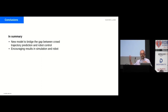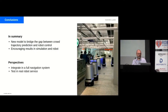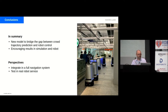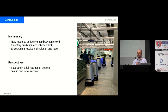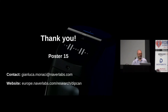To conclude, we present a new model to bridge the gap between crowd trajectory prediction and robot control, achieving encouraging results in simulation and on a robot platform. As future directions, we are working to integrate this model into a mixture-of-experts approach that includes a planner to handle static obstacles and room layouts. A real deployment testbed exists at our headquarters in Seoul where about 50 robots are already delivering coffee to employees, and as crowds return, this will be a nice testbed for this algorithm.